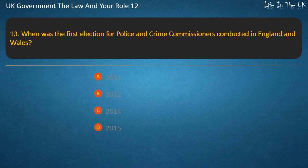Question 13: When was the first election for police and crime commissioners conducted in England and Wales? Options: 2011, 2012, 2014, 2015. Answer: 2012.